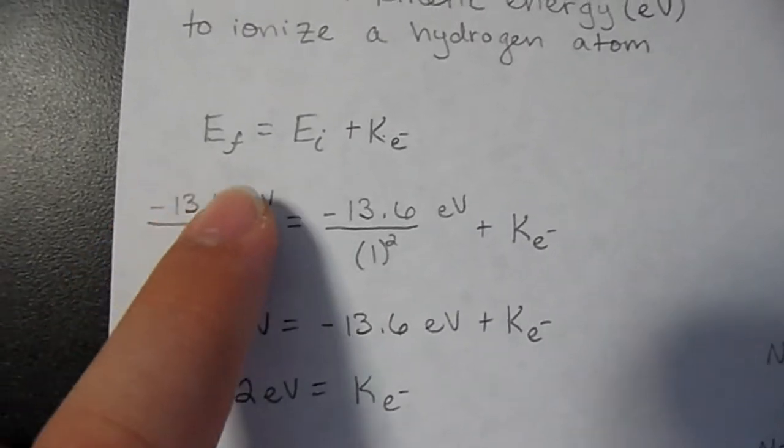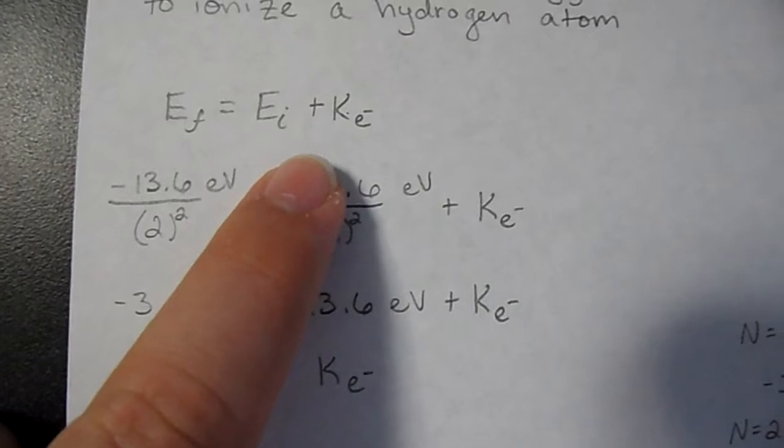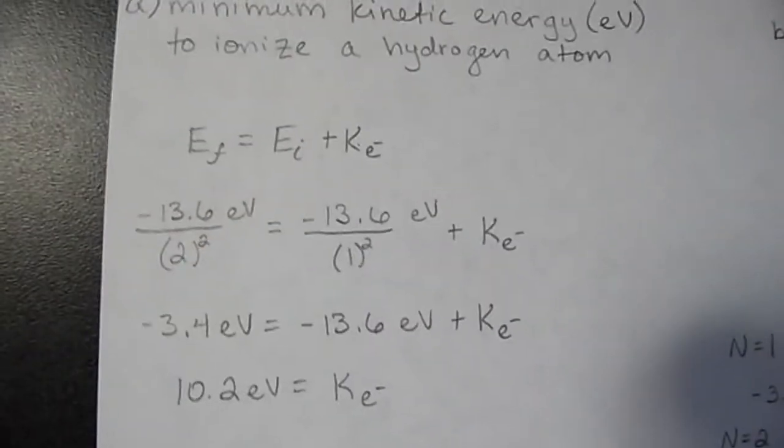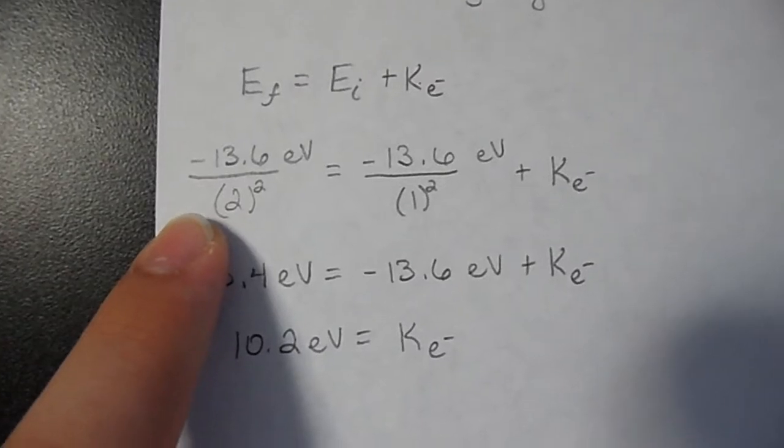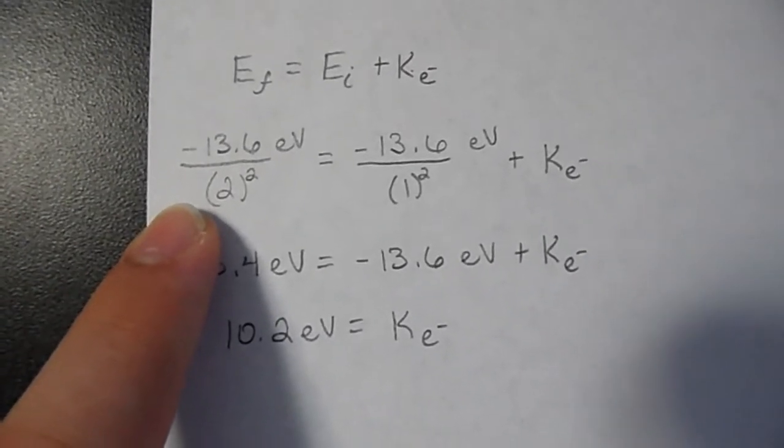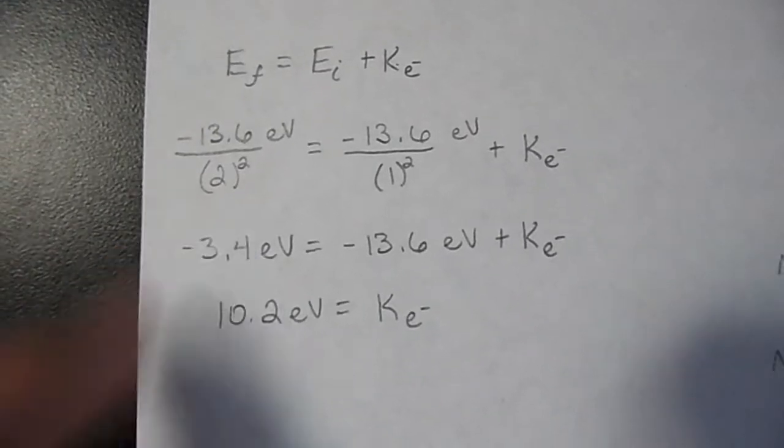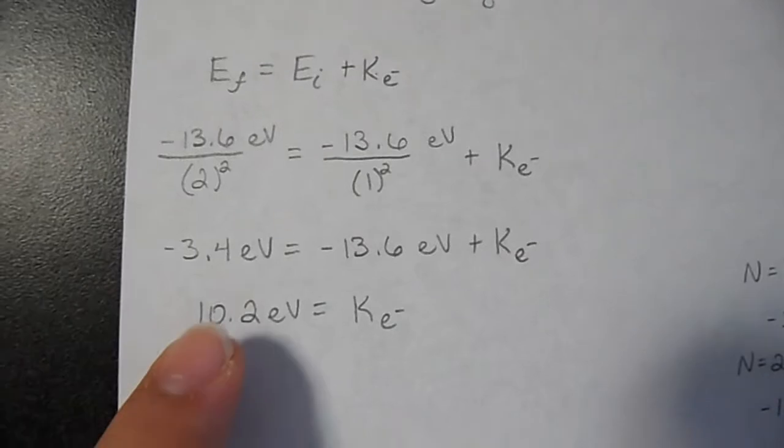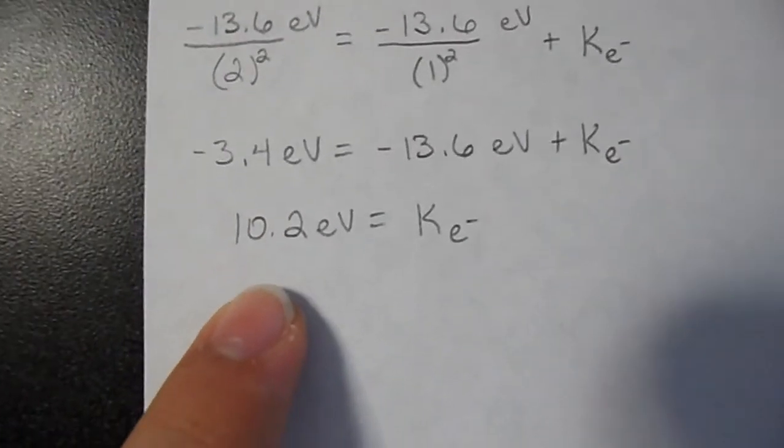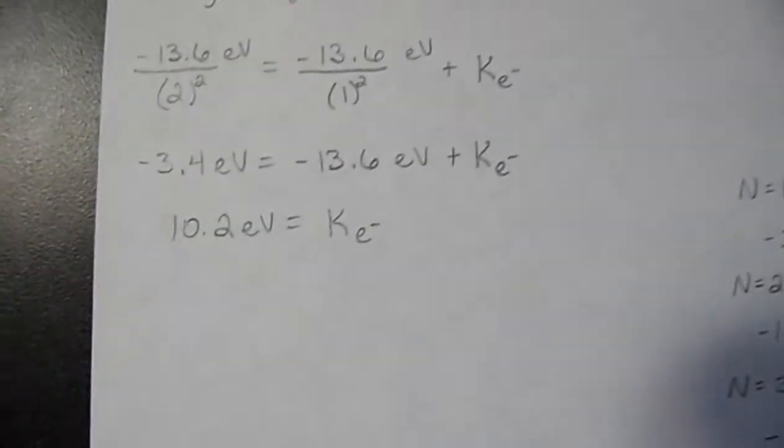The final energy is equivalent to the initial energy plus some kinetic energy. So the formula for a hydrogen atom would be negative 13.6 electron volts over n squared, where n is the energy level, plus some kinetic energy of an electron. Doing a little algebra, you can find that that is 10.2 electron volts of kinetic energy.